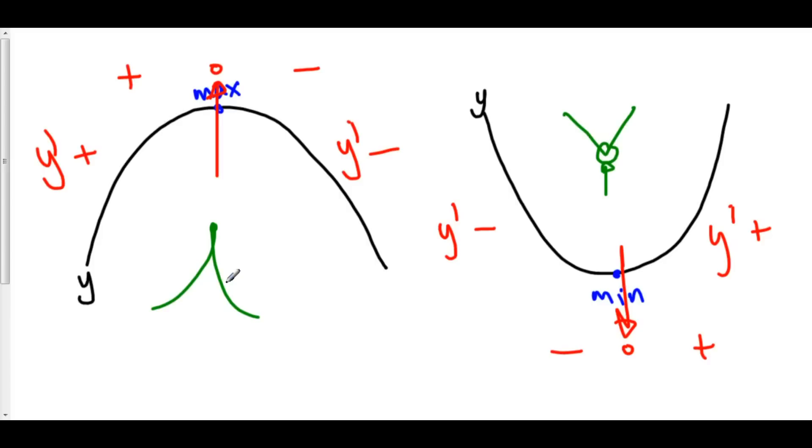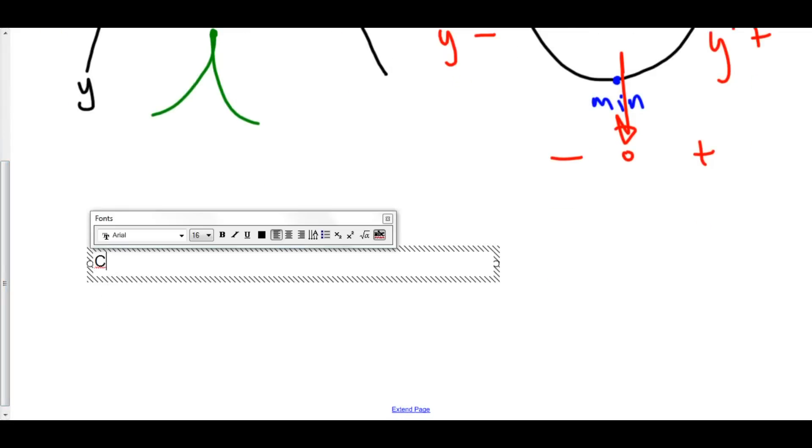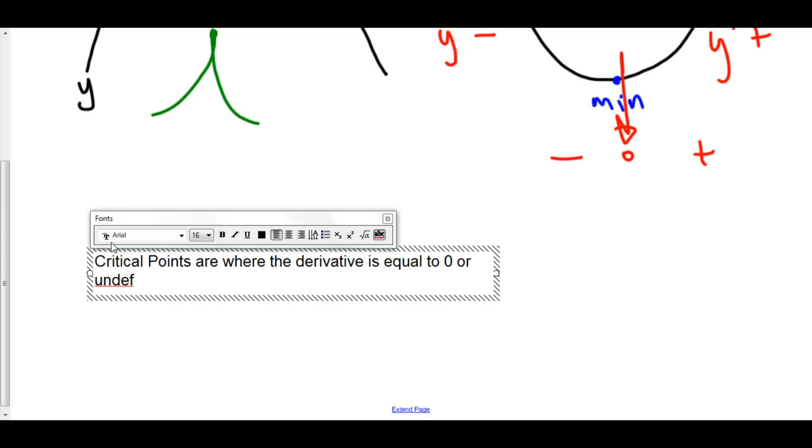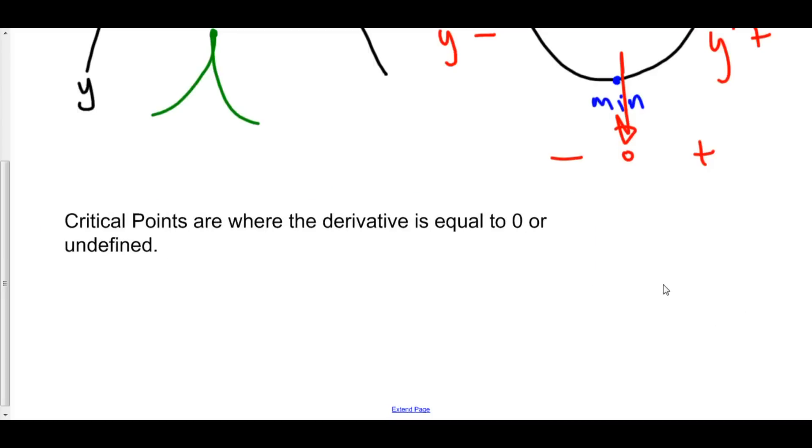So, when looking for extrema, we have to find what are called critical points. And critical points are where the derivative is equal to zero or undefined. We will be finding a lot of critical points from here on, in this section.